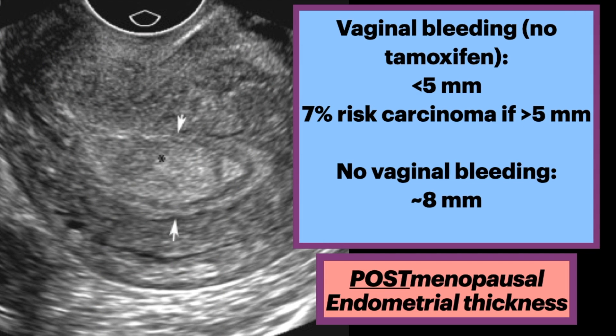In terms of postmenopausal endometrial thickness, one needs to first differentiate if there is vaginal bleeding or not, and also if there is tamoxifen or hormonal use. If there is vaginal bleeding, 5 mm should be the cutoff for endometrial thickness. If there is no vaginal bleeding, sometimes people use up to 8 mm, but this can be controversial.